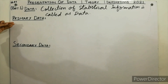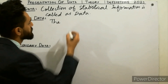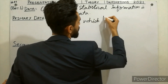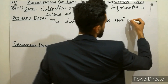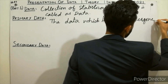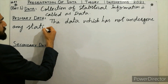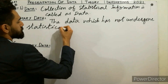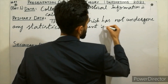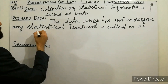Next step: what is the difference between primary data and secondary data? The data which has not undergone any statistical treatment is called as primary data. Must remember this definition.